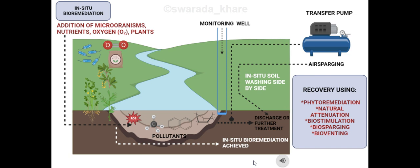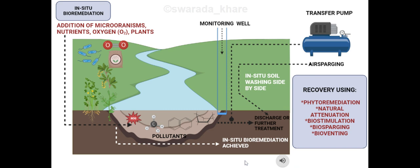Bioremediation techniques are decided on the basis of location and the extremity of the contamination. These are broadly classified into in-situ and ex-situ methods. Effective methods of in-situ are bioventing and biosparging. In-situ bioremediation means remediation carried out at the site of contamination, and this approach avoids the excavation and transport of heavily contaminated areas.